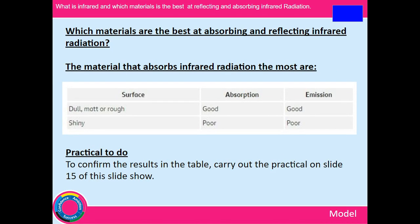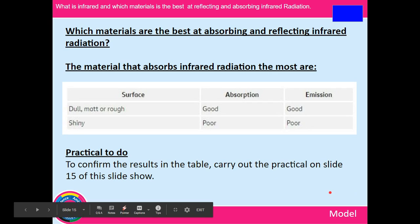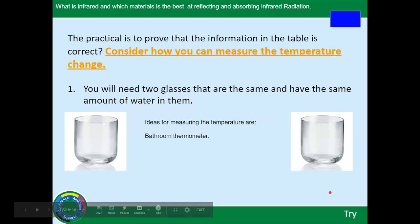Now for a practical experiment. On the slide is a table: dull, matte, rough surfaces are good absorbers and good emitters of infrared radiation, while silver shiny surfaces are poor absorbers and emitters. You'll carry out a practical to confirm these results — see slide 15 of the slideshow.